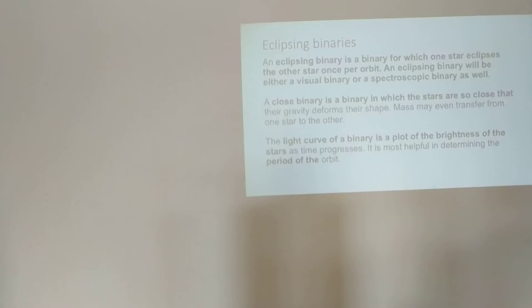You can have both stars eclipsing in primary or secondary eclipses, or just one. An eclipsing binary will either be a visual binary, meaning we could see both—that's rare—but a spectroscopic binary is the most common case. A close binary is simply when they're so close that gravity can deform their shape. The light curve is the plot of brightness as time progresses, and it's helpful in determining the period.